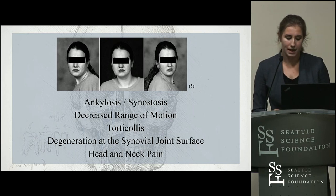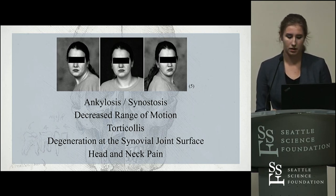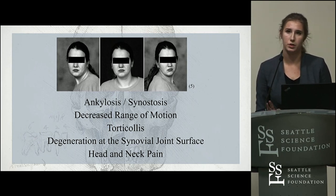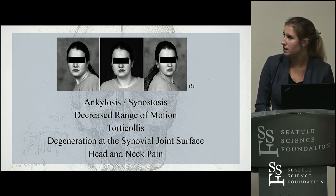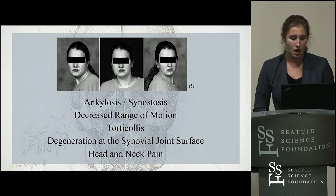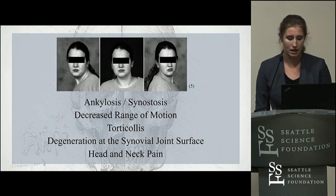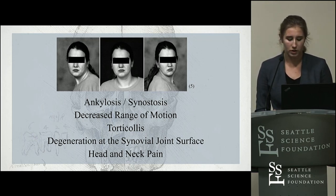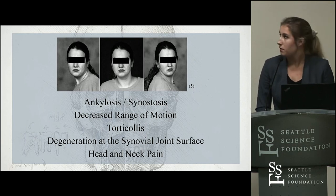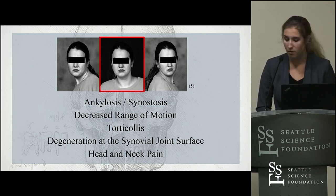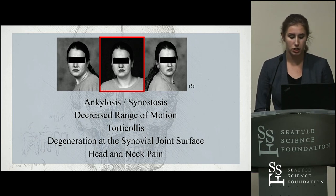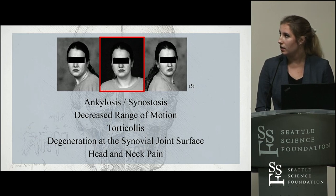The paramastoid process, especially when articulating with the transverse process of the atlas, can have a slew of symptoms and pathologies. A case report of a 21-year-old woman reported chronic neck pain, headaches, and abnormal neck motion. As seen in the figure above, in a neutral position she has torticollis, and the case report also discussed how she had rotational issues to the left.